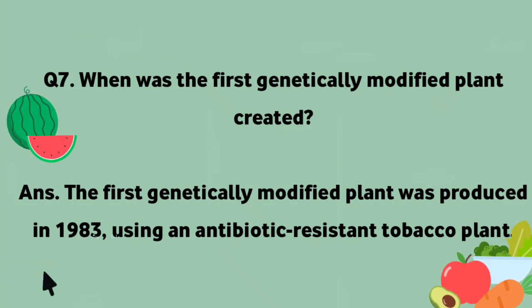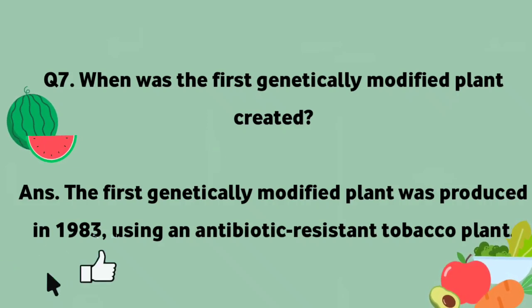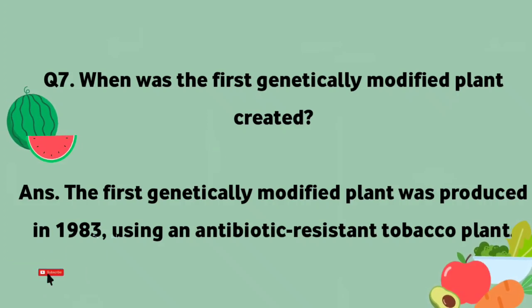When was the first genetically modified plant created? The first genetically modified plant was produced in 1983, using an antibiotic-resistant tobacco plant. Pahla geniyati tawar per tabdeel shudha plant 1983 mein tiyar kiya gaya tha, jis mein antibiotic-mizahim tambaqo plant isti maal kiya gaya tha.